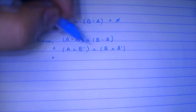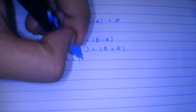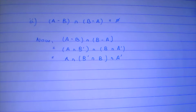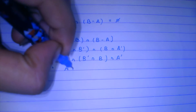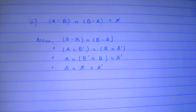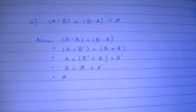Since all are intersections, the brackets don't hold any meaning. Concentrating on B intersection B complement — what do B and B complement have in common? That is phi, nothing. They don't have anything in common. And what does phi have in common with any other set? That is also phi. So we have proved our second identity.